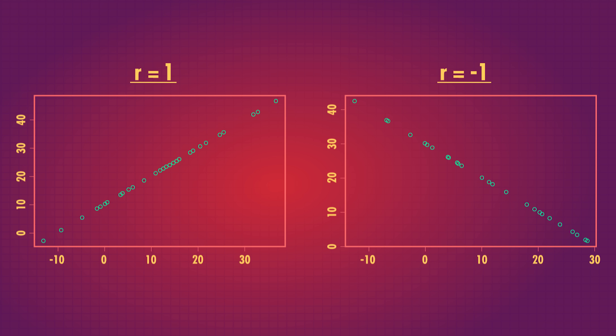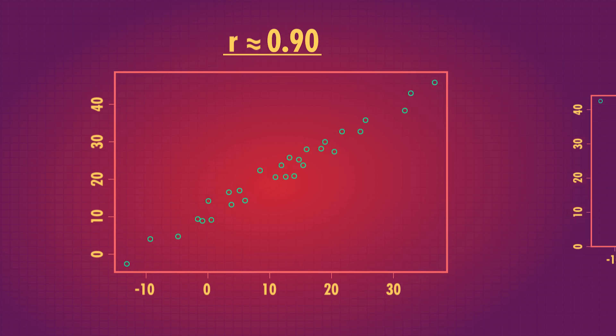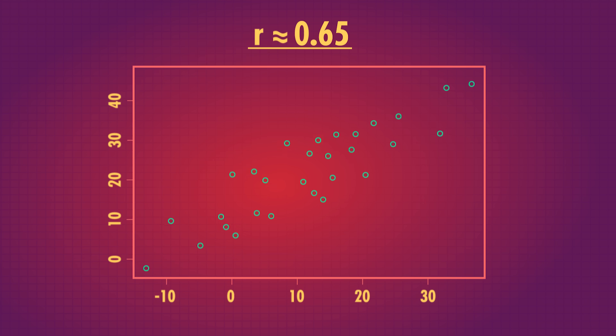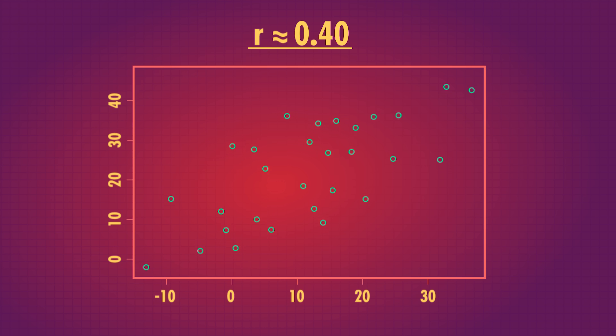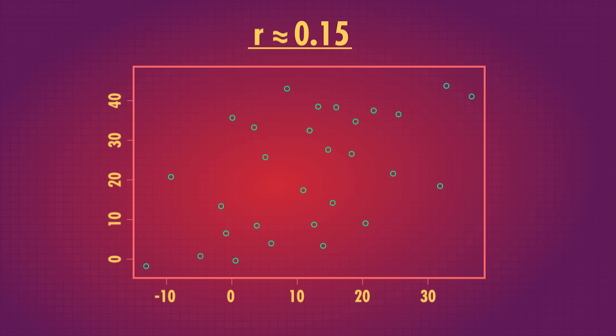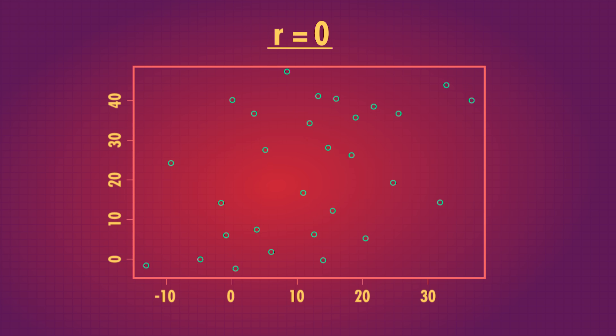A correlation of 1 or negative 1 would be a perfectly straight line, meaning you can exactly predict one value from the other. For example, if we looked at correlation of the number of hours you're asleep versus awake — if I know one of those values, I can tell you exactly what the other one is; we all only have 24 hours in a day, even Beyonce. As you get closer and closer to a correlation of zero, the points are more and more spread out around our regression line, and eventually at zero, there's no linear relationship at all — it's just dots.